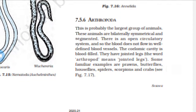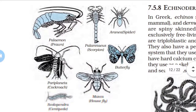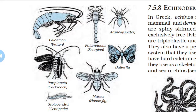Next we discuss Arthropoda. Arthropoda is the largest group of animals. These animals are bilaterally symmetrical and segmented, and they have an open circulatory system.